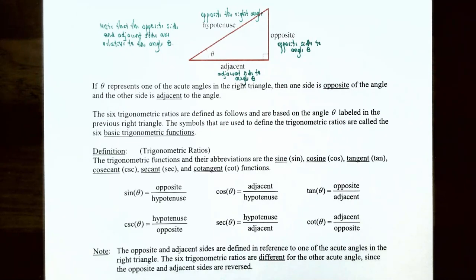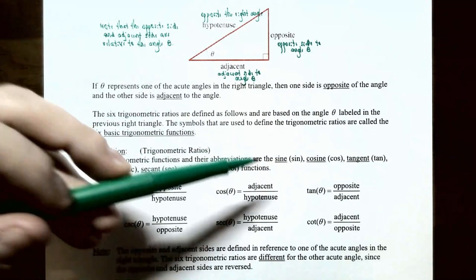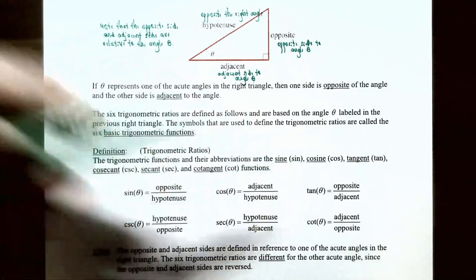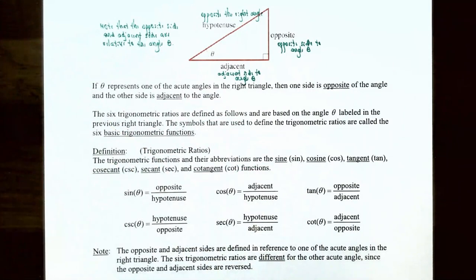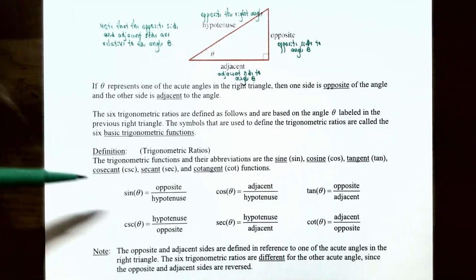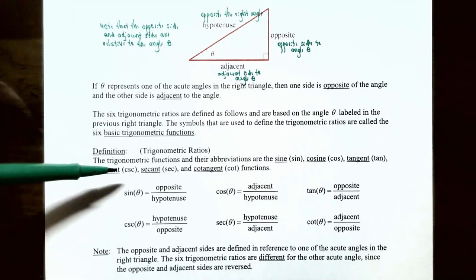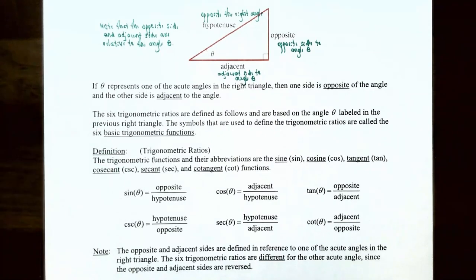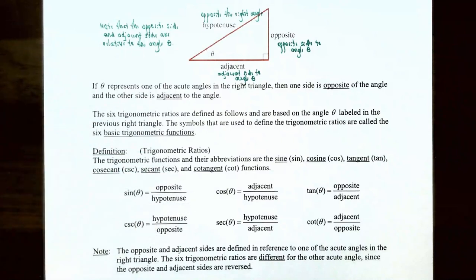The six trigonometric functions and their abbreviations are: the sine function (SIN), the cosine function (COS), the tangent function (TAN), the cosecant function (CSC), the secant function (SEC), and the cotangent function (COT).